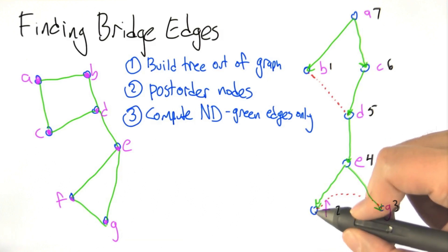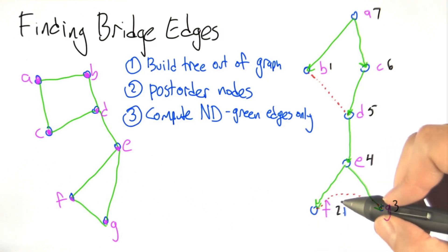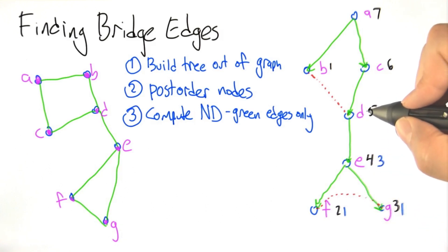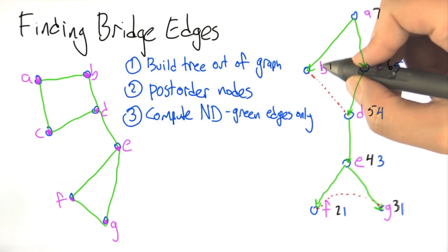F has just the node itself and no descendants so it's got a number of descendants of 1, same thing with G. E has 1 descendant, 1 descendant plus itself for 3. D has the 3 descendants of E plus itself for 4. C has the 4 descendants of D plus itself is 5.